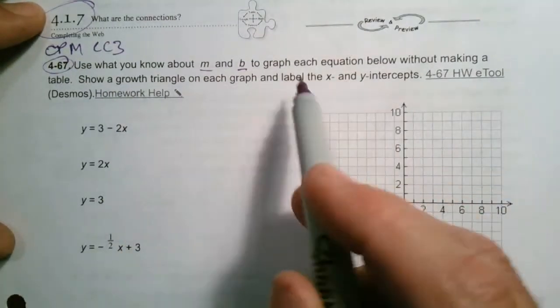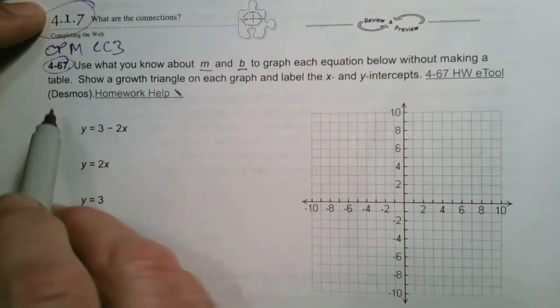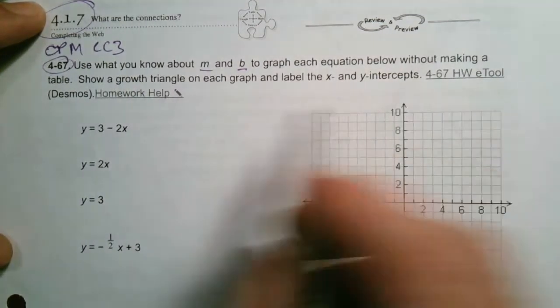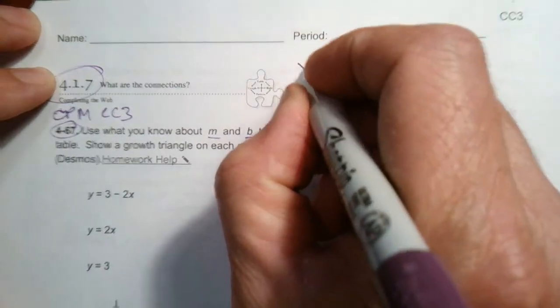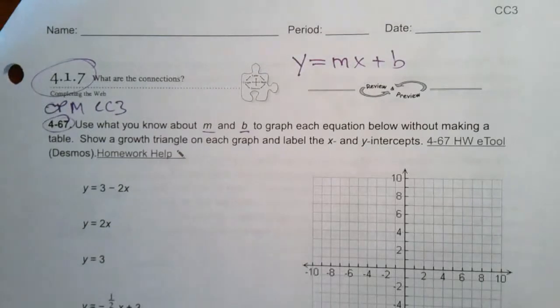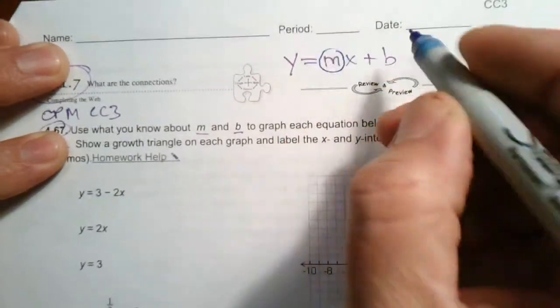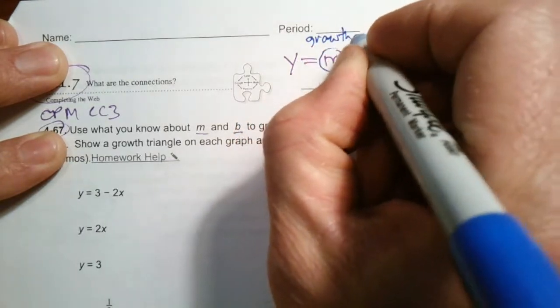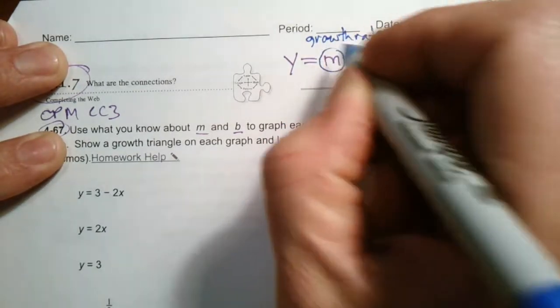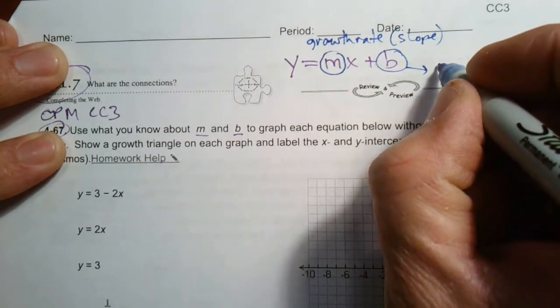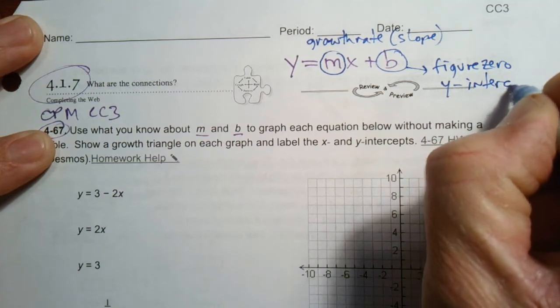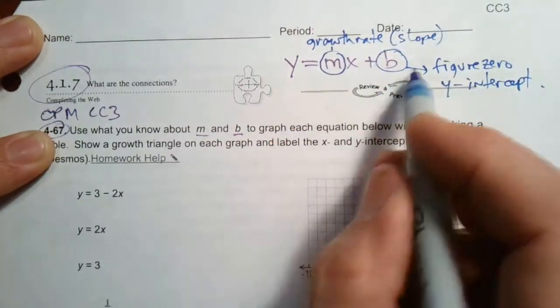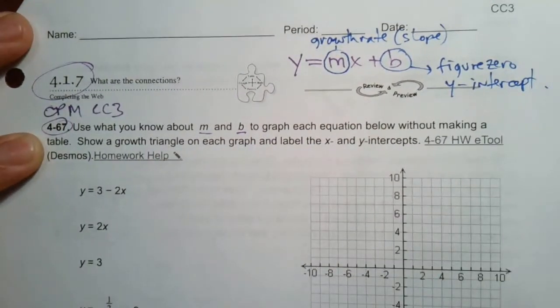It says use what you know about M and B to graph each equation below without making a table. Show a growth triangle on each graph and label the x and y intercepts. So this whole M and B business, that's coming from y equals mx plus b. That's the linear form of an equation for graphing where your M represents your growth rate, also known as slope, and then your B represents the initial figure zero, or also known as the y-intercept when you're graphing.